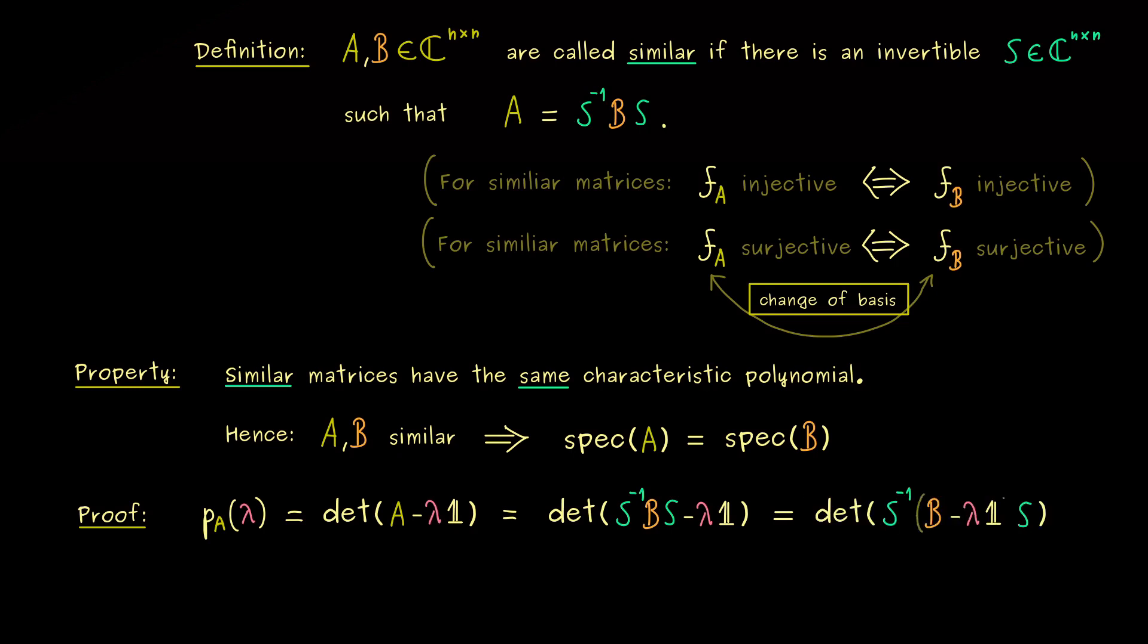Because then we can factorize the whole thing with S inverse on the left and S on the right hand side. Obviously, this is the same, because S inverse times S is the identity matrix again.